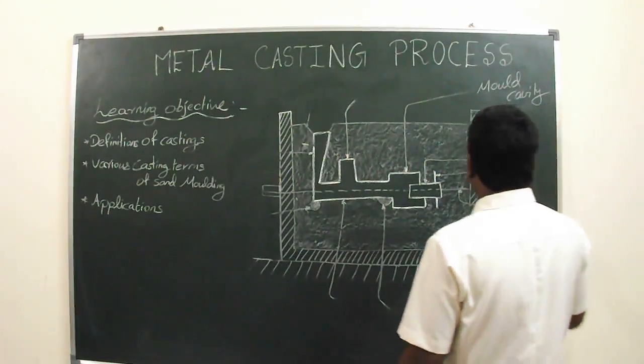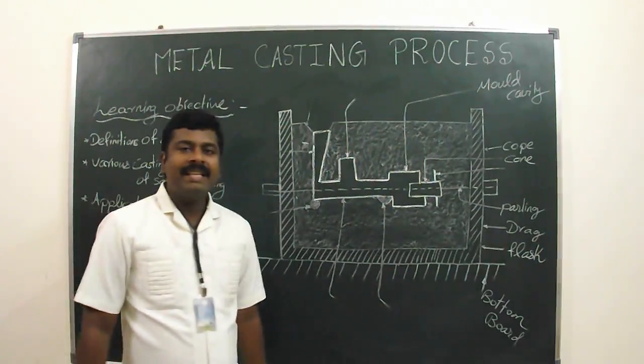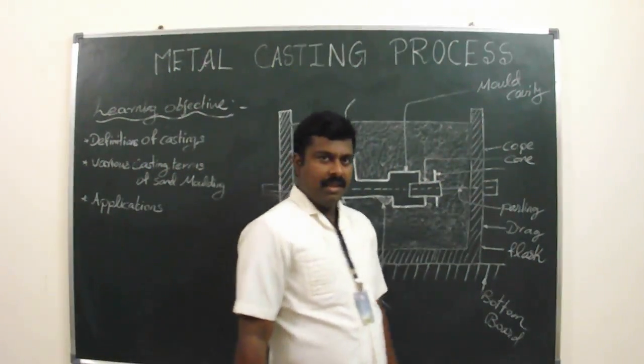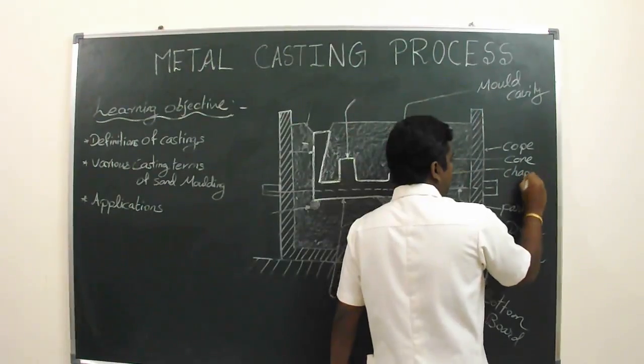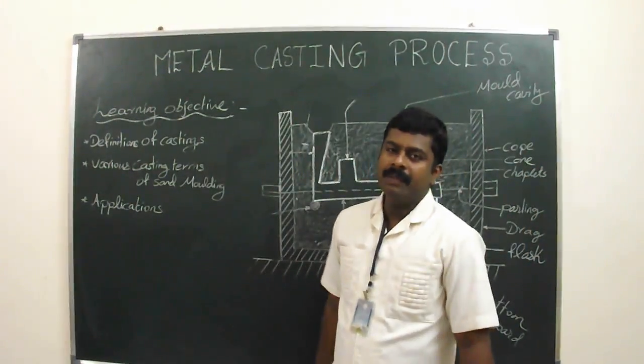Next one is the core. Core is used to make the hollow cavities in the casting. And next one is the chaplets. Chaplets are used to support the core inside the mold cavity.